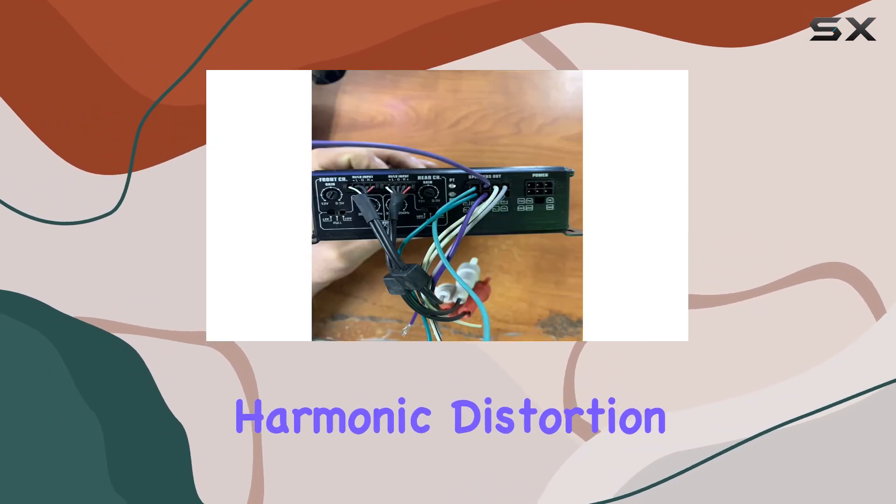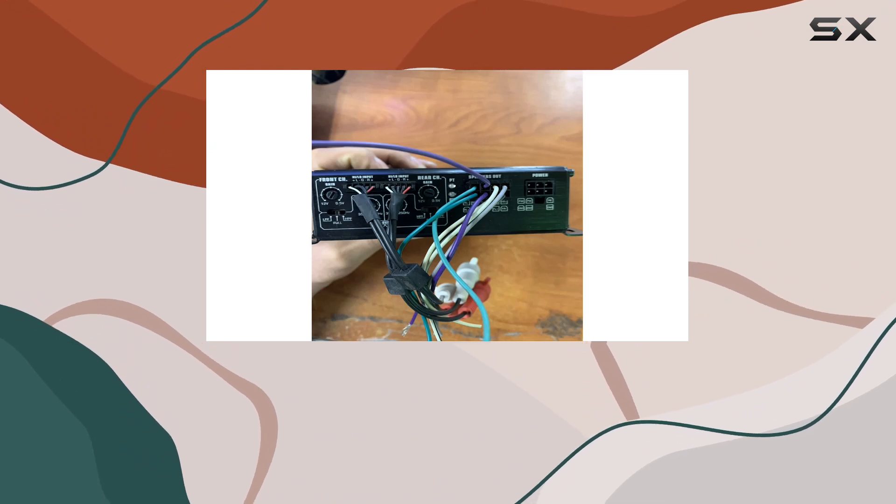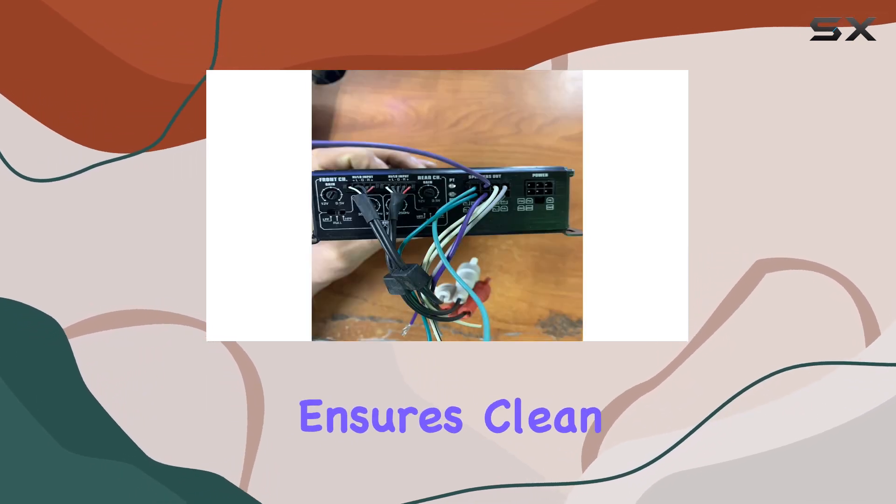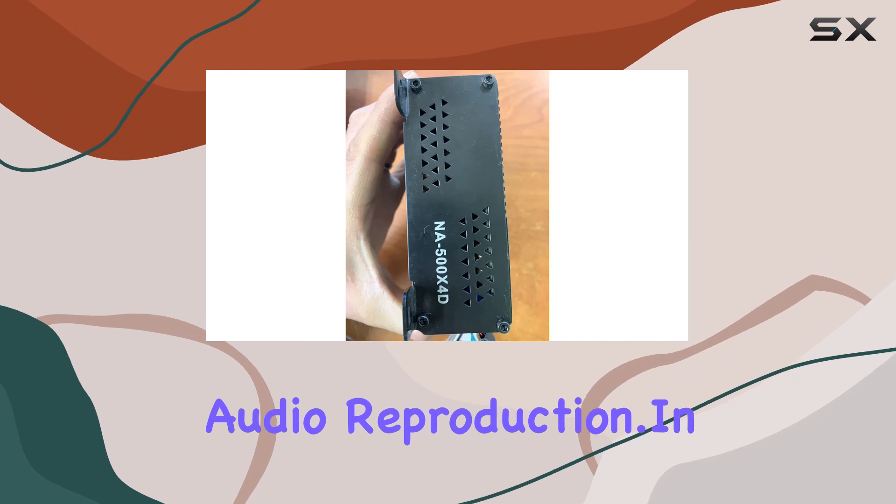With a total harmonic distortion (THD) of 0.2% at 4 ohms load and 30% rated power, and a signal-to-noise ratio of 80 dB, this amplifier ensures clean and powerful audio reproduction.